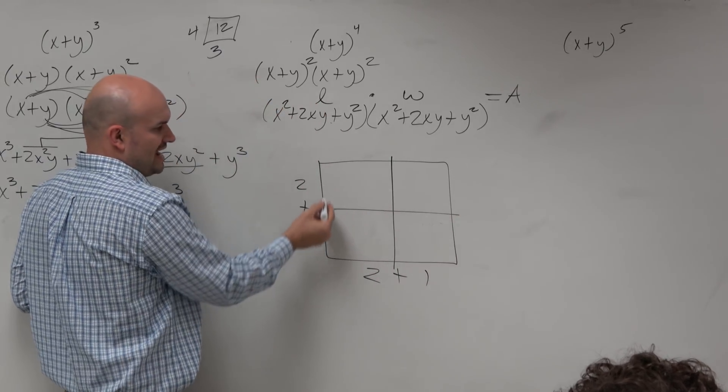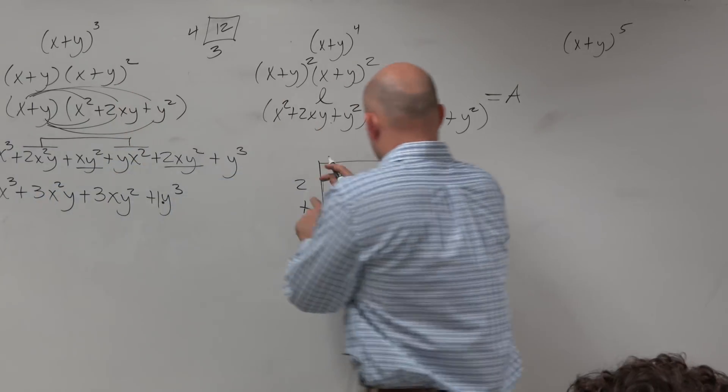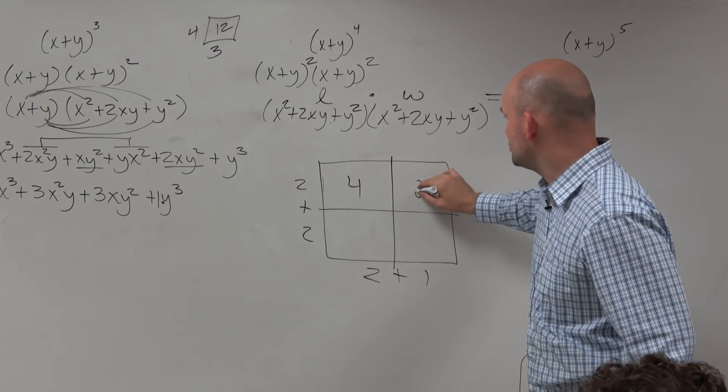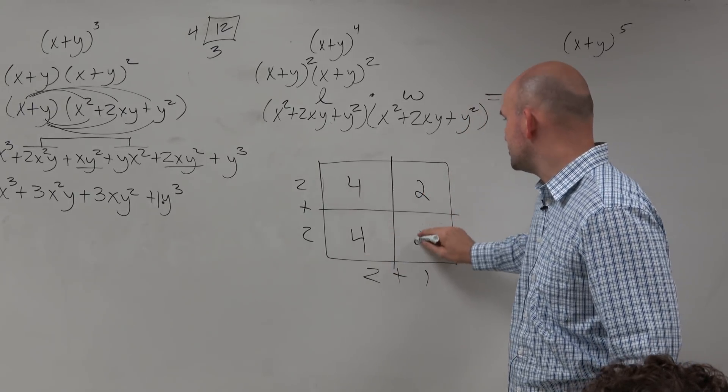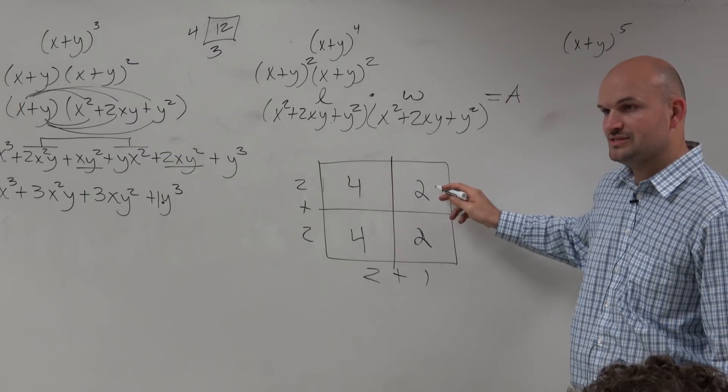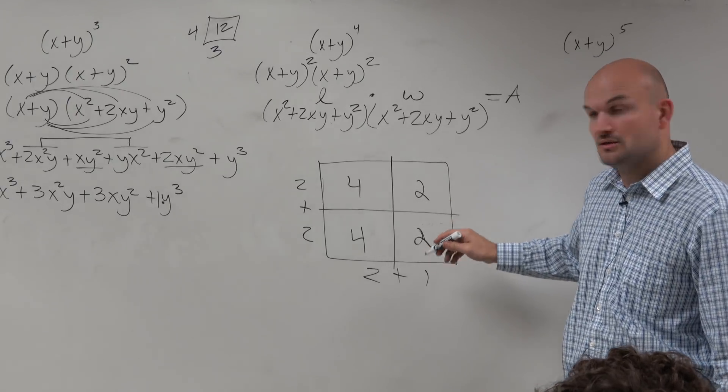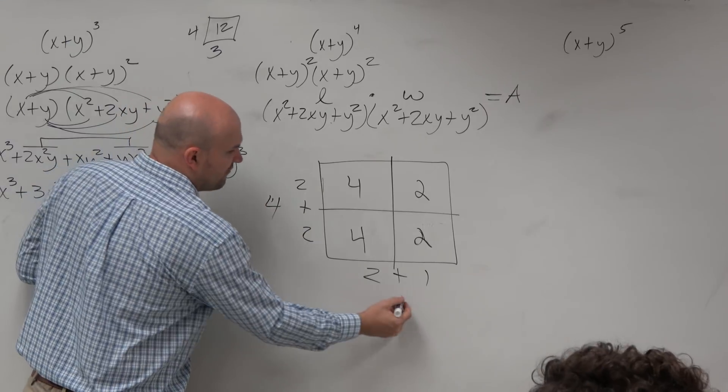Here is the length. Here is the width. 2 times 2 is 4. 2 times 1 is 2. 2 times 2 is 4. 2 times 1 is 2. Add all those up. What do you get? 4 plus 4 is 8 plus 2 is 10 plus 2 is 12. So I still got the same answer if I just would have done 4 times 3.